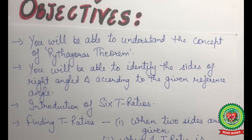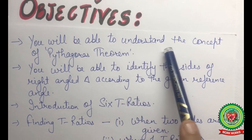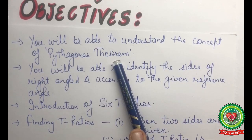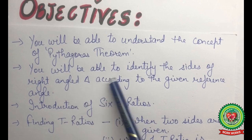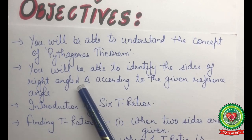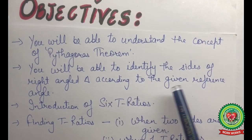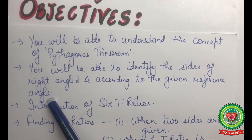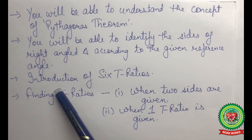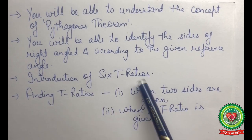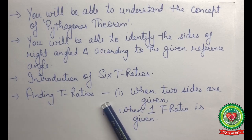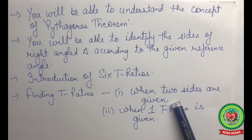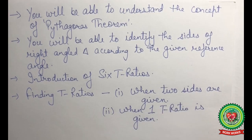The first objective is that you will be able to understand the concept of Pythagoras theorem. You will be able to identify the sides of a right-angled triangle according to the given reference angle. You will be introduced to the six trigonometric ratios, and you will be able to find t-ratios when two sides are given, or when one of the t-ratios is given.